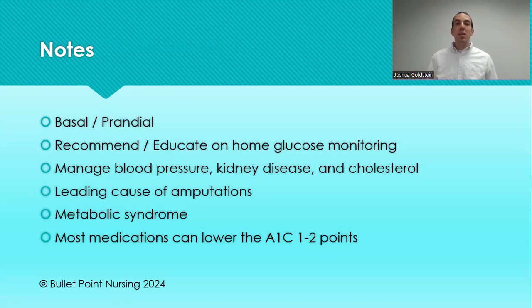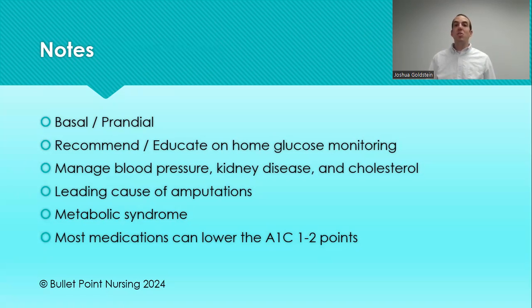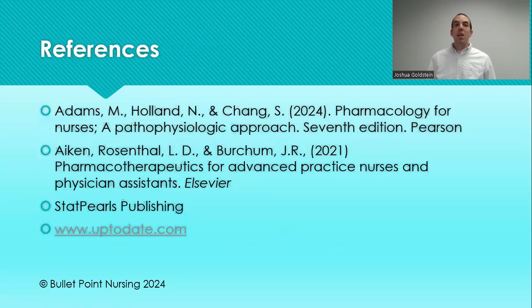If they're up at an A1C of 10, 11, 12, or 13, no single medication is going to get them down. It's going to take diet, exercise, and odds are multiple medications. Metformin and most of these drugs can lower A1C by about one to two points. It really is going to be a team effort with the patient to make sure they're working on diet and exercise. Here are the references for this lecture — if you have any questions, please let me know.